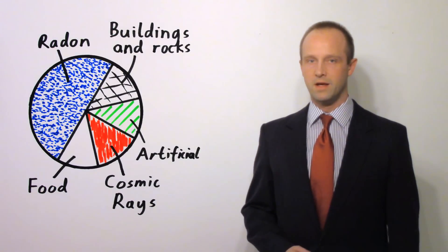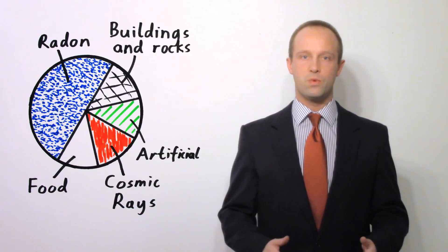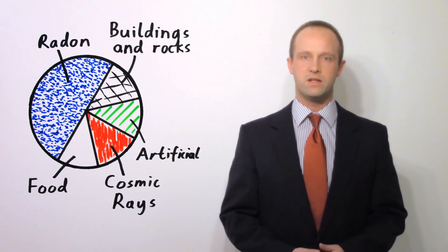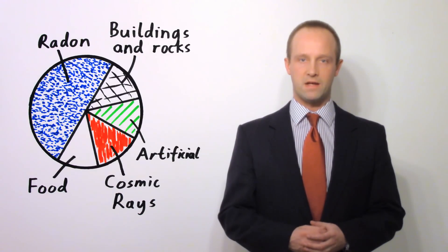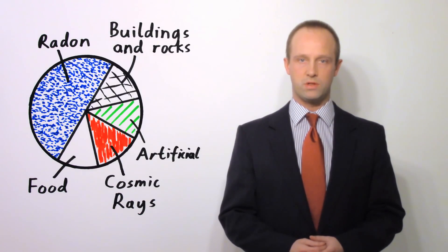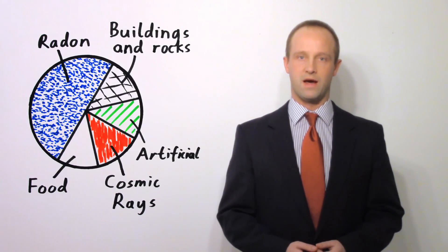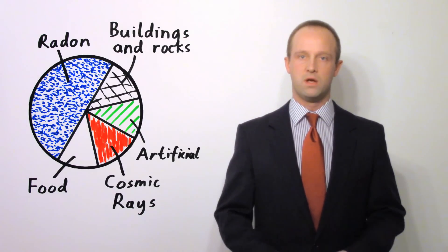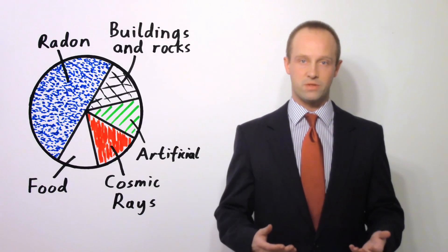Now, background radiation is most easy to represent with a pie chart like this. This represents all the different sources of radiation which we're exposed to — background radiation is just radiation which is all around us all the time. You can see that the vast majority of it is actually completely natural, from sources like rocks, radon gas which is released, and cosmic rays from outer space.